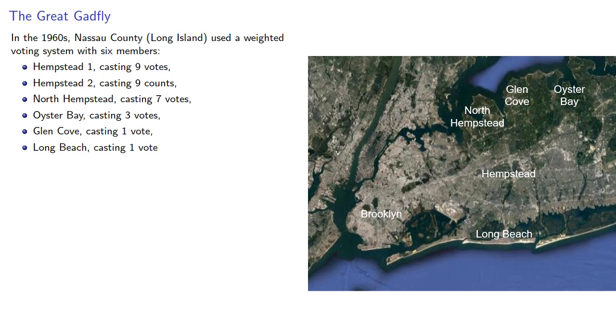The lawyer John Banzhaf III analyzed the voting system by counting the number of times a voter was critical in a winning coalition. What Banzhaf found was, well, we'll talk about that later.